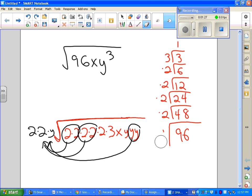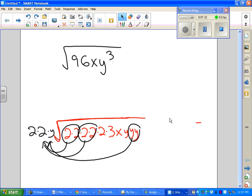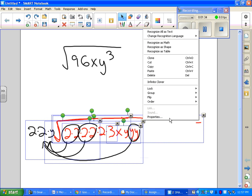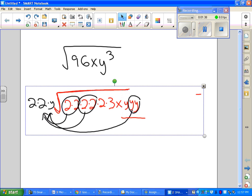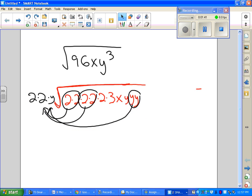Let me erase this so I can move the other thing out of the way. All right, I have my pairs. I have 2, 2, and a y.